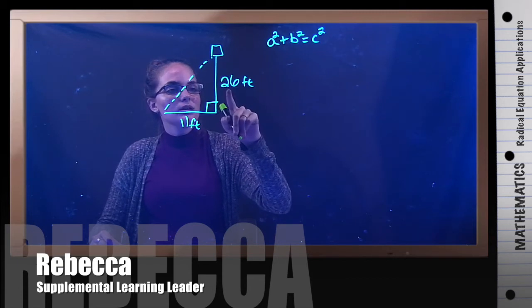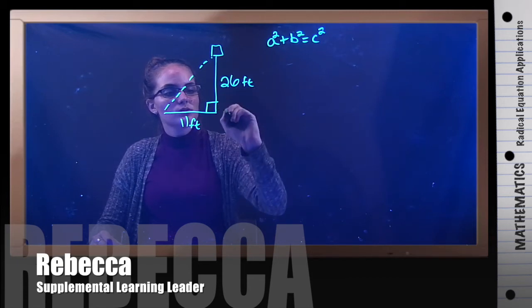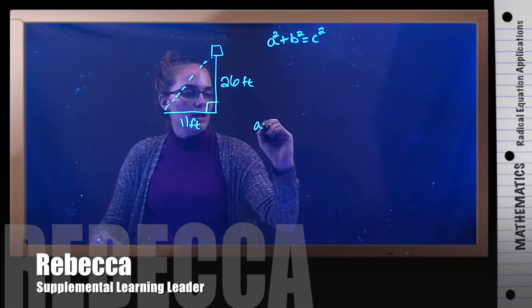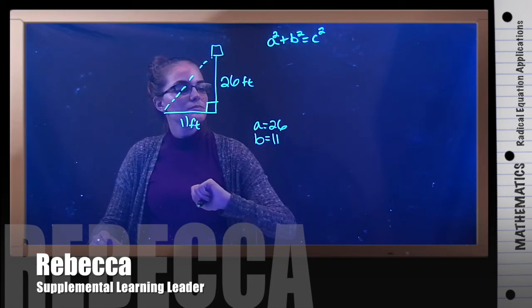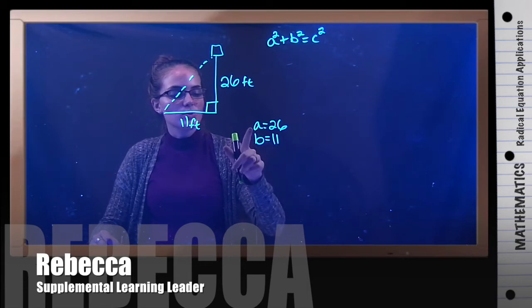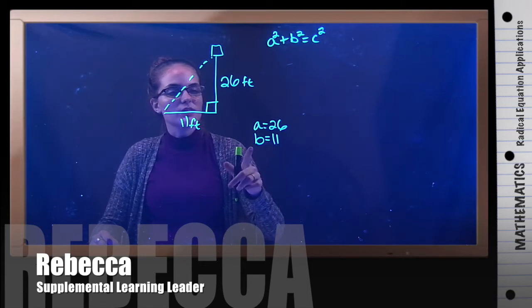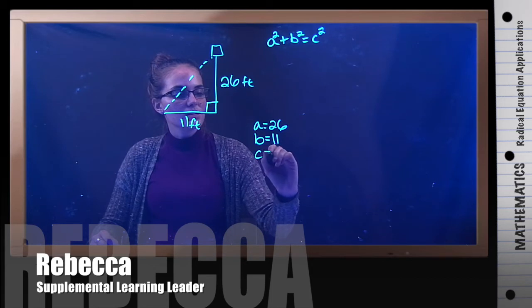So our a could be 26—a is 26, and our b could be 11. It doesn't matter; you can make b 26 and a 11. But our c is what we're trying to find.